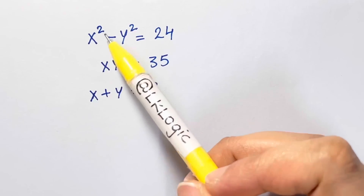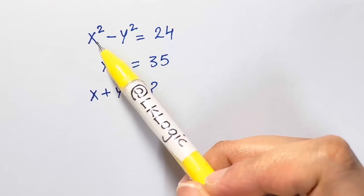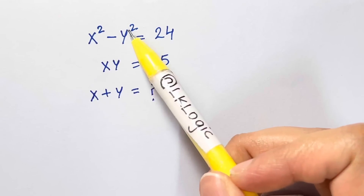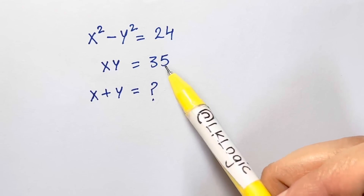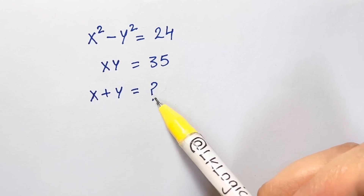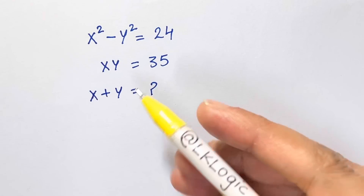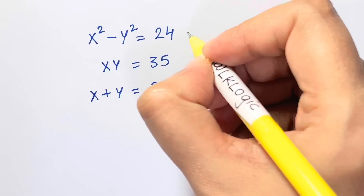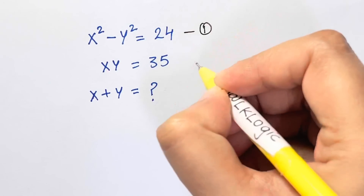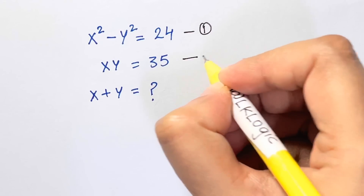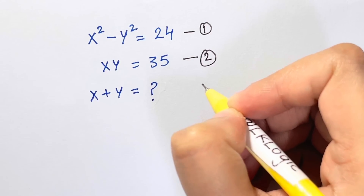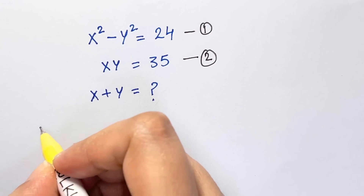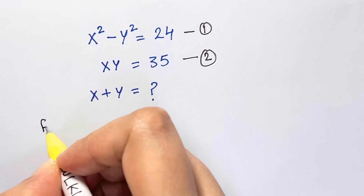Hi guys, here we're going to solve this system of equations: x² - y² = 24 and xy = 35, and we need to find x + y. Let this be equation 1 and this be equation 2. The first thing we are going to do is take equation 1.